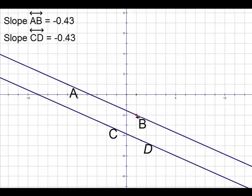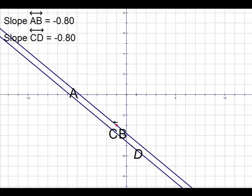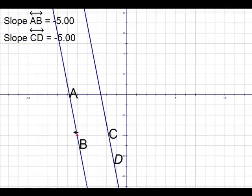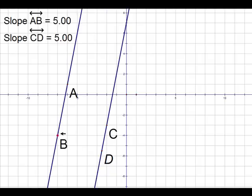Also notice that no matter how I move point B, it appears that the two lines stay parallel to each other, even when both lines are vertical with an undefined slope.